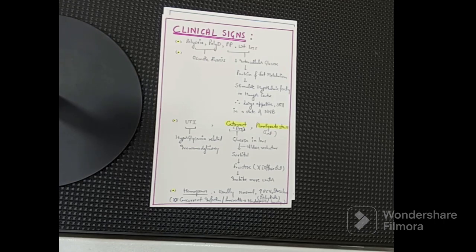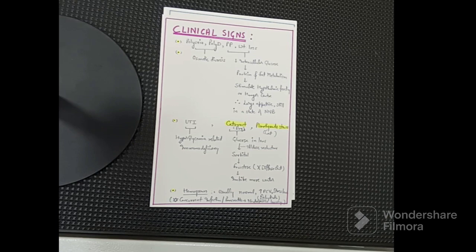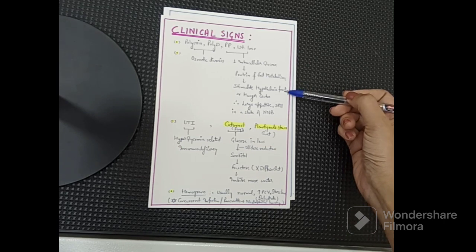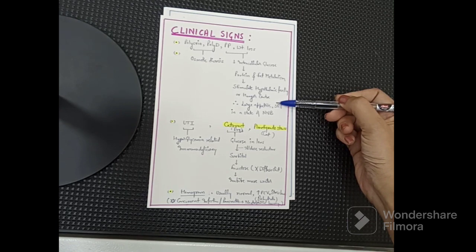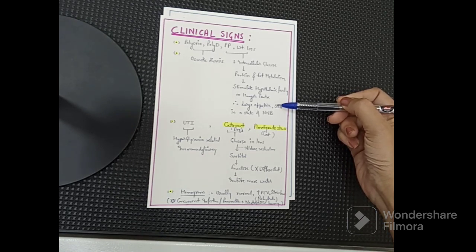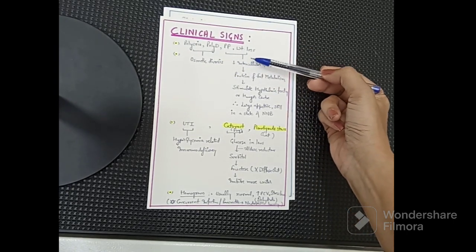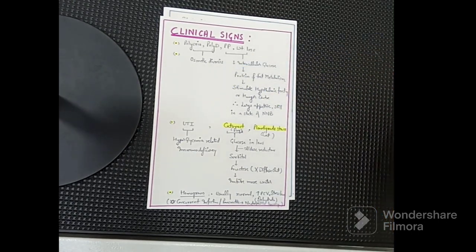Polyphagia and weight loss occur because of decreased intracellular glucose. Without insulin, blood glucose levels are high but glucose cannot get into the cells. As a result, the animal must metabolize protein and fat reserves, which stimulates the hypothalamic feeding and hunger center. Consequently the animal has a large appetite, yet remains in a state of negative nitrogen balance leading to weight loss.